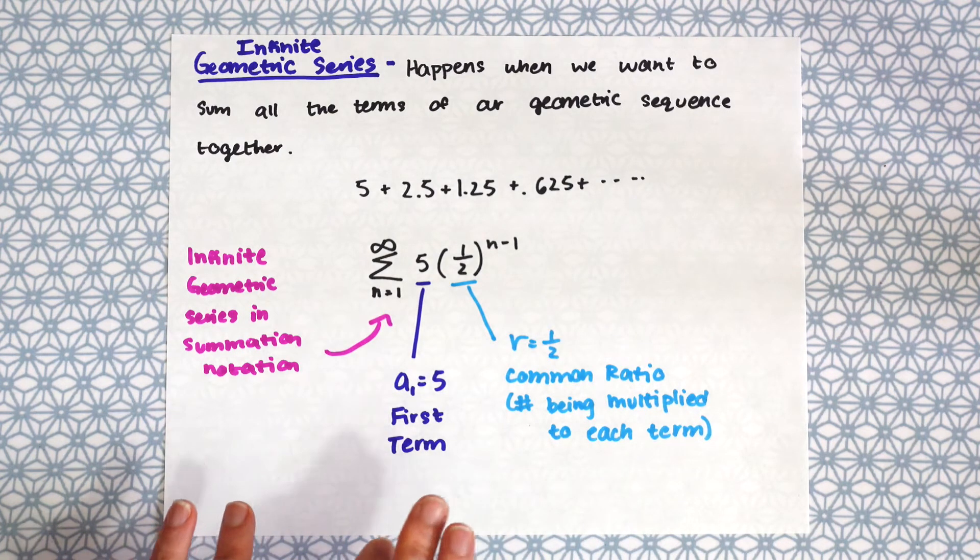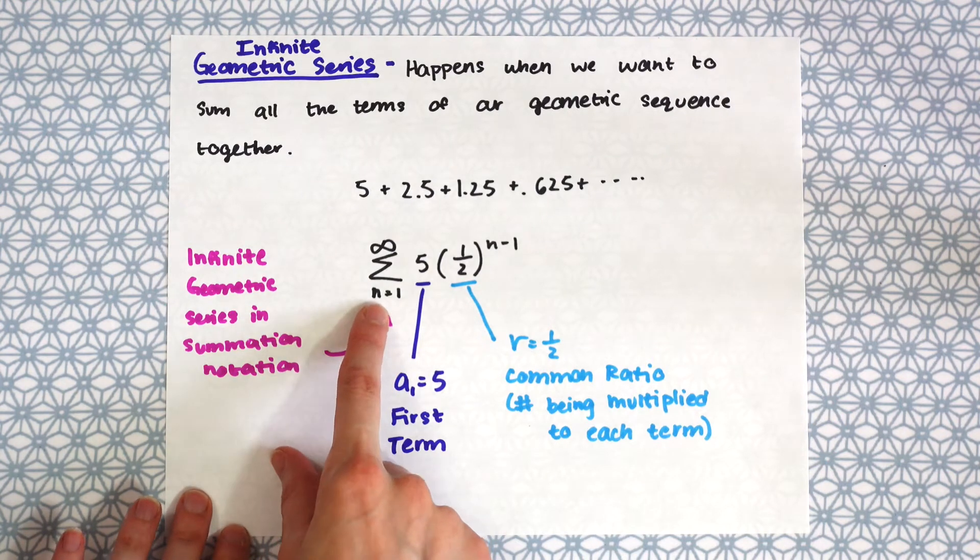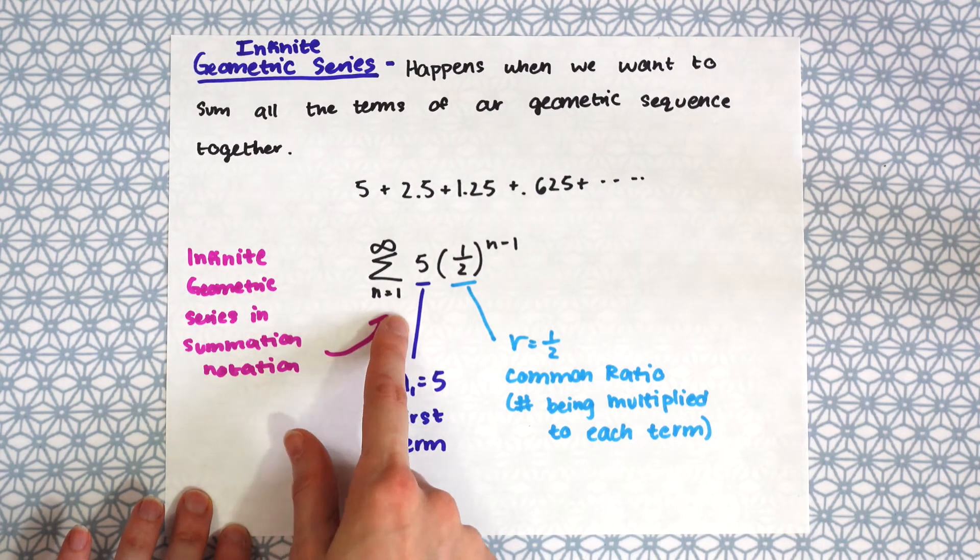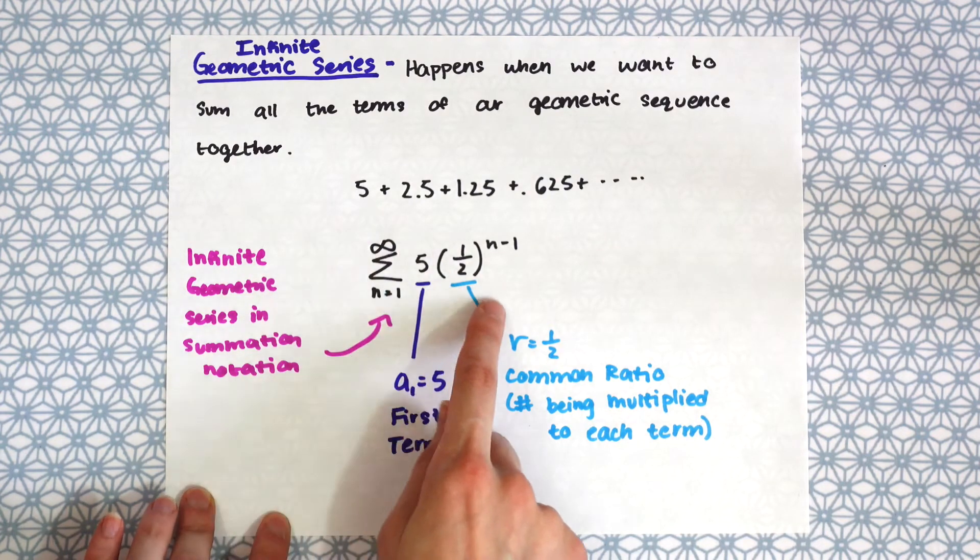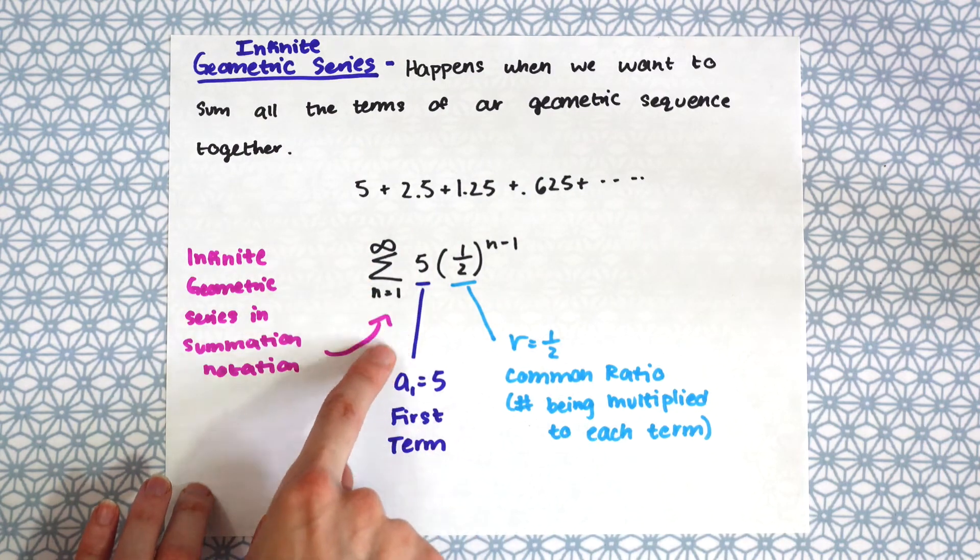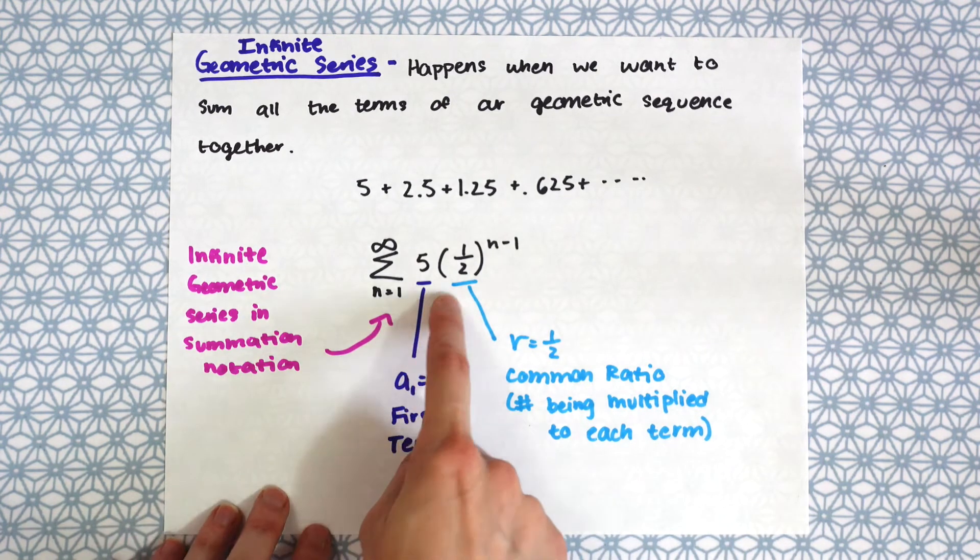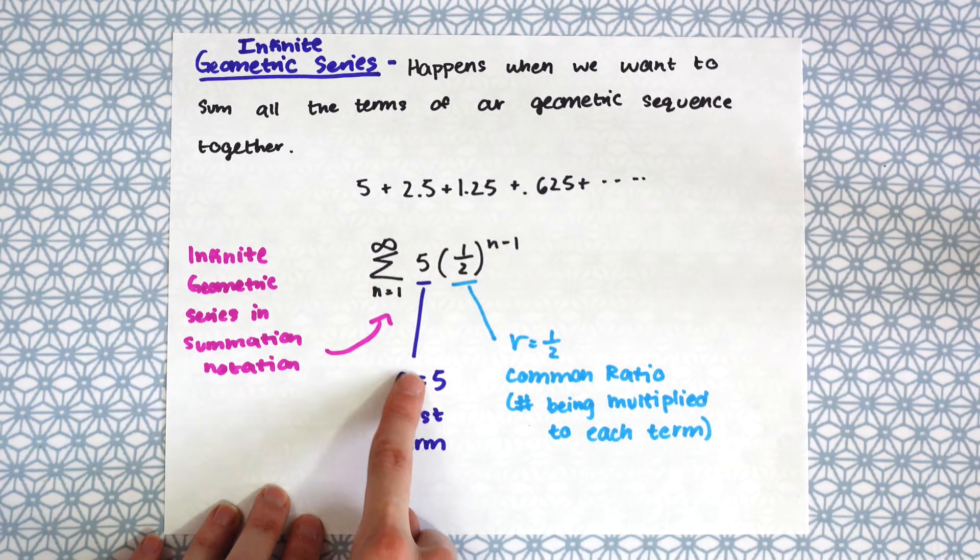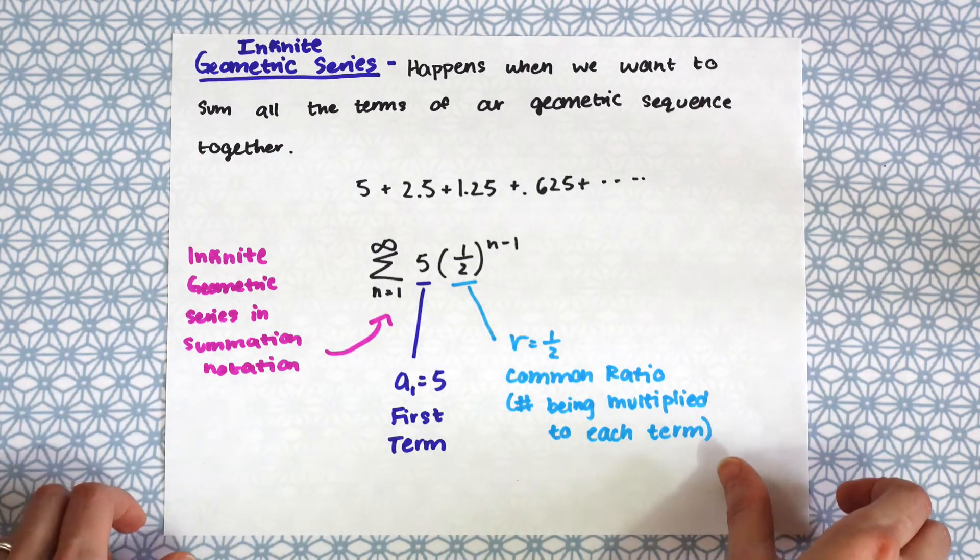So we can also actually write this in summation notation right here. So this says the sum of n equals 1, so starting at the first term, all the way to infinity, and then we have our geometric sequence here. So this is just rewritten in summation notation, and just a little reminder about what each part of this notation means. This is the first term, 5, 1 half represents the common ratio, that number that's being multiplied to each term, which we just saw in the last example.